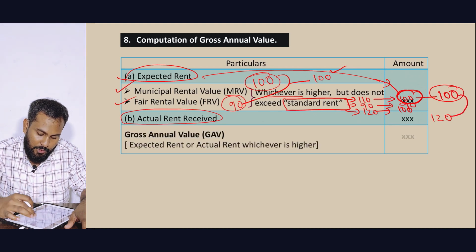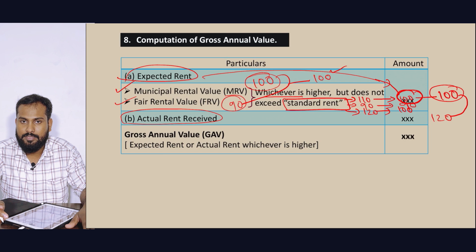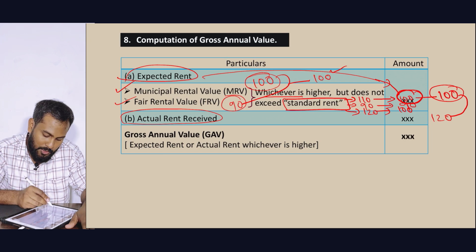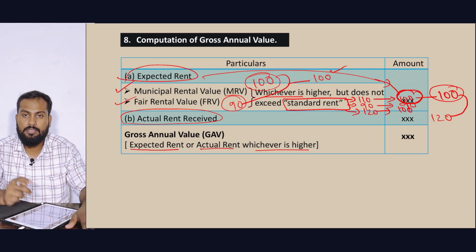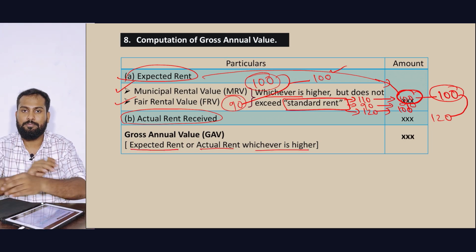Gross Annual Value — what is the actual value? Which one is higher?